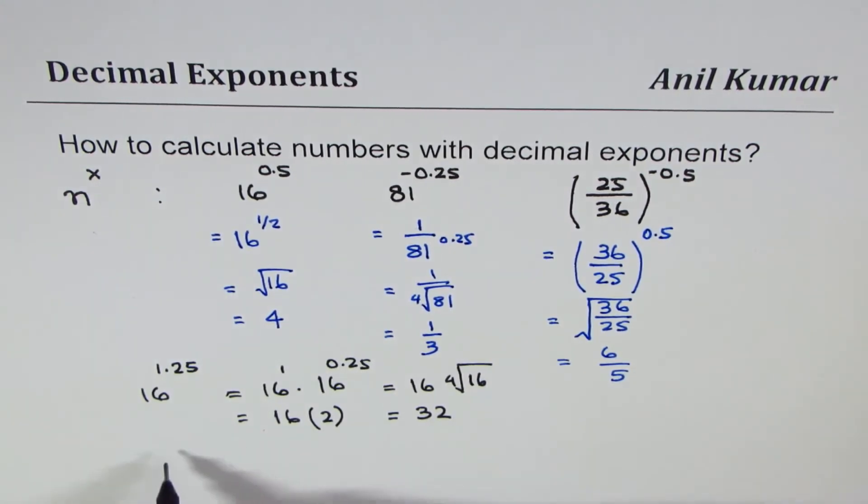Let's try 8 to the power of minus 0.3 recurring. 0.3 recurring can be written as 1 over 3. So we could write this as, because it's minus, we'll get 1 over 8, and 1 over 3 is 0.3 recurring. We are trying to find the cube root of 1 over 8, so it becomes 1 over the cube root of 8, and the cube root of 8 is 2, so we get 1 over 2.